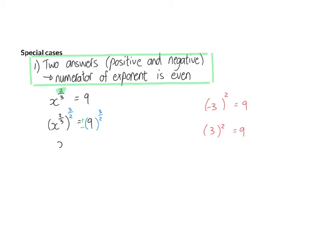Now we can simplify. On the left we have x to the power of 1. On the right I am first going to change 9 to 3 to the power of 2. And when I now multiply those two exponents I am going to end up with plus or minus 3 to the power of 3, which means I have plus or minus 27.